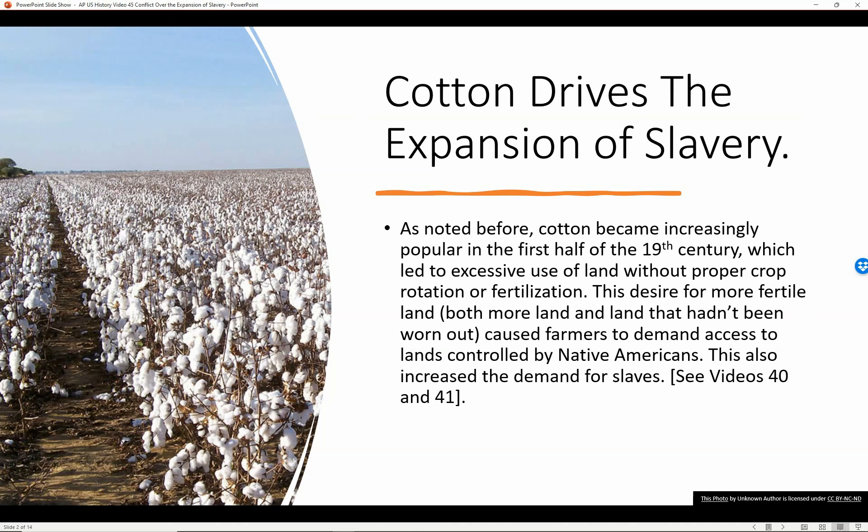Cotton drives the expansion of slavery. As noted before, cotton became increasingly popular in the first half of the 19th century, which led to excessive use of land without proper crop rotation or fertilization. This desire for more land — land that hadn't been worn out, land that was still fertile — caused farmers to demand access to lands controlled by Native Americans. This also increased the demand for slaves.